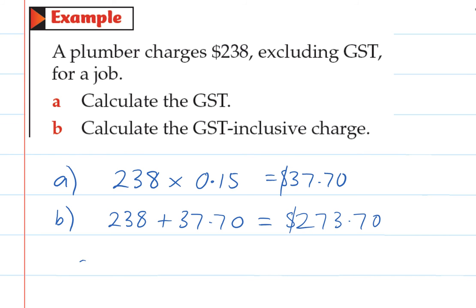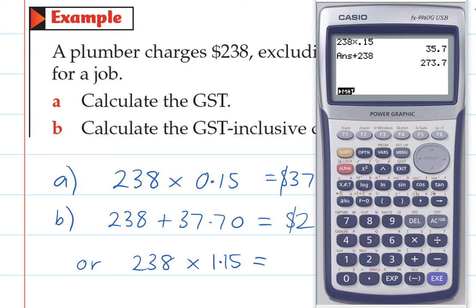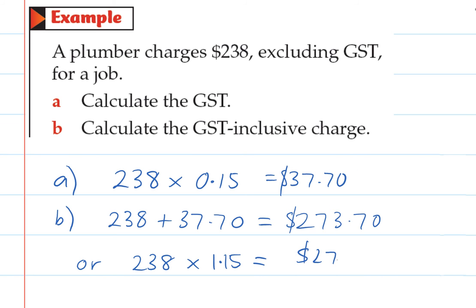Another way to do it is to take 238 and times it by 1.15. And that does it all in one calculation. So I'll show you that it gives you the same answer. So 238 times 1.15. And that also gives us $273.70. So both of those ways are valid. This way is a bit faster. But hopefully you understand that the 1 is just keeping the 238 and the 0.15 is adding the 15%.